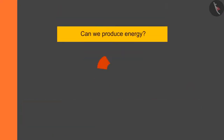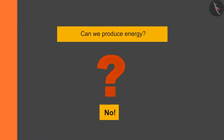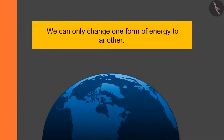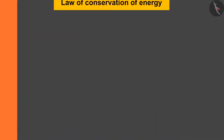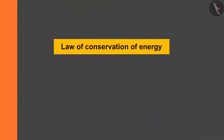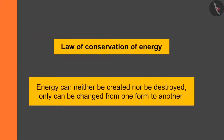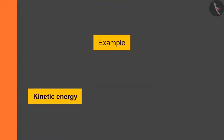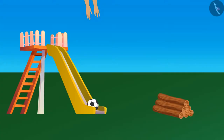Can we produce energy? No, we can't produce it — we can only change one form of energy to another. According to the law of conservation of energy, energy can neither be created nor be destroyed; it can only be changed from one form to another.